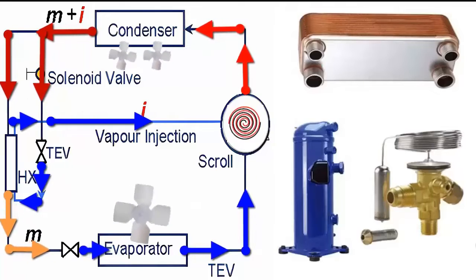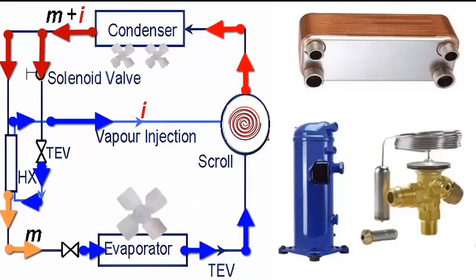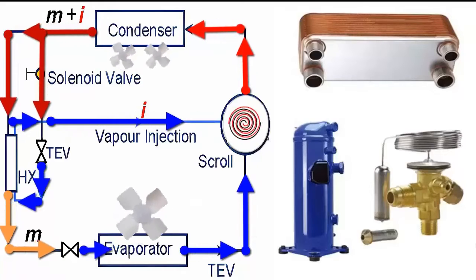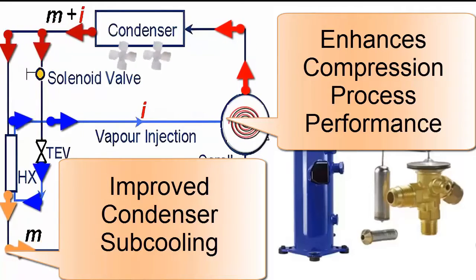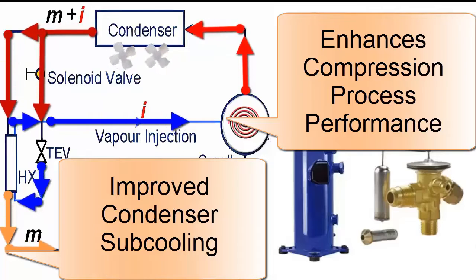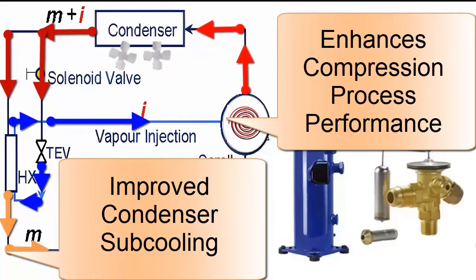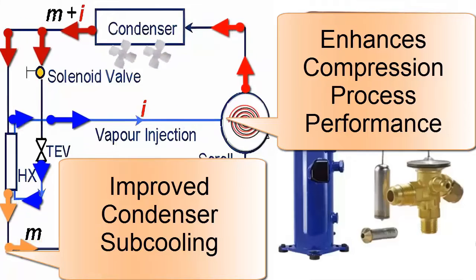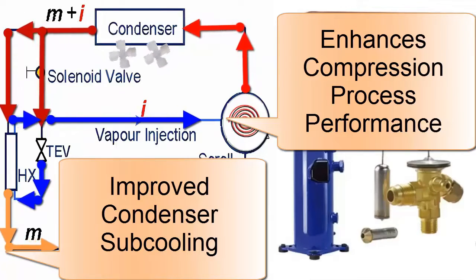The efficiency of this cycle is superior to that of conventional single-stage scroll compressors. Improving refrigerant sub-cooling at the condenser outlet increases cooling capacity, and cooling during compression within the scroll compressor improves overall refrigerant gas compression efficiency by resembling a two-stage compression.